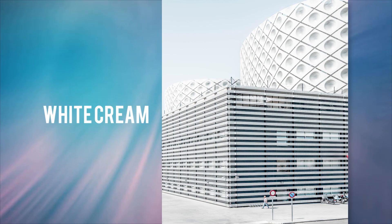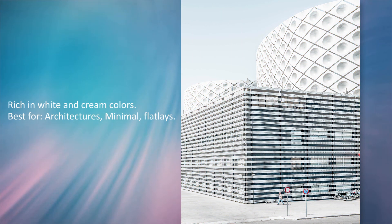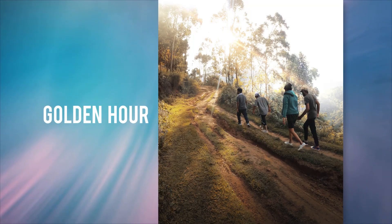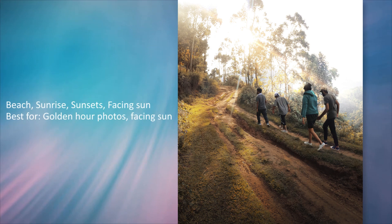The twelfth one is White Cream — a pure creamy white look great for flat lay photos and minimal light low photos, giving a cool whiteish photo feel. And the last one, finally, is Golden Hour — a preset inspired by sunrise and sunset giving a warm orangish feel.